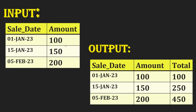The expected output should have sale_date, month, and a cumulative total. For the first row, sale date 1st Jan, you get 100. Next, on 15th Jan, you have 100 plus 150, which gives 250. In the third row you are going to see 450 — so each row accumulates the running total.